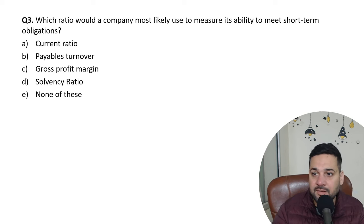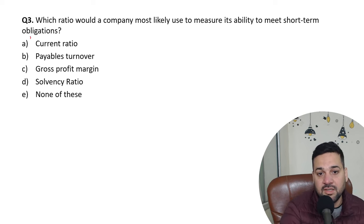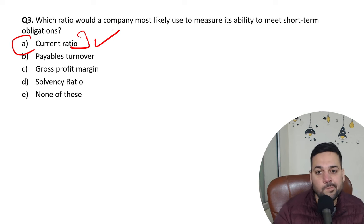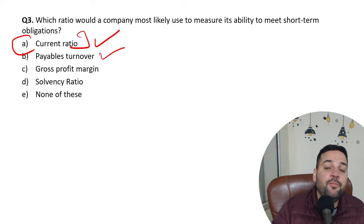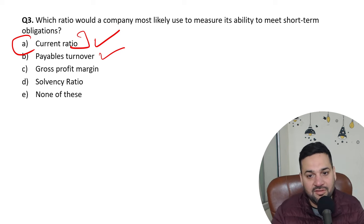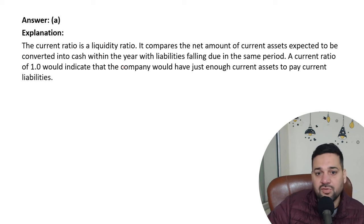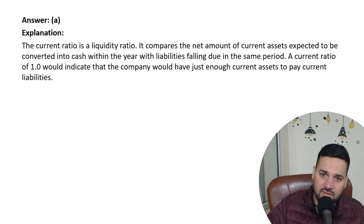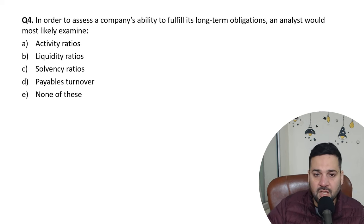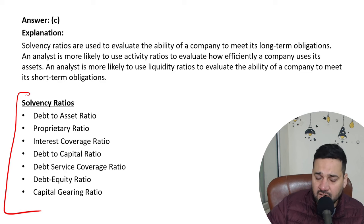Which ratio would a company most likely use to measure its short-term obligations? You would look at the current ratio. If you want to assess short-term obligations, use the current ratio. Payable turnover ratio shows how you pay your suppliers and how often. To look at the operating cycle, you would use payable or receivable turnover ratios. If you want to check a business's capacity to cover long-term obligations, there are solvency ratios. Short-term uses current ratios; long-term uses solvency ratios. Make sure to study all of these.